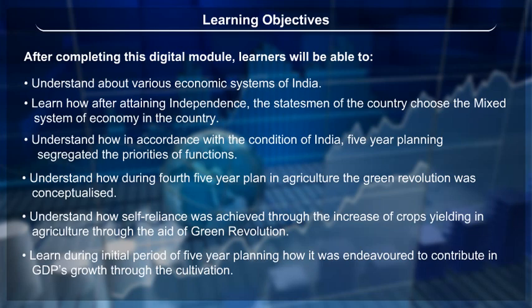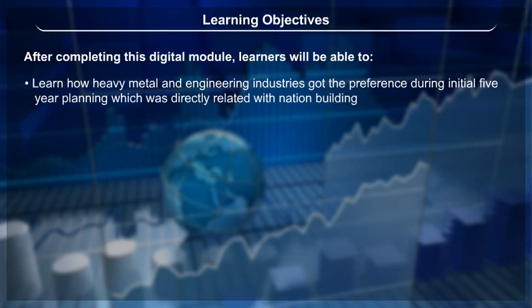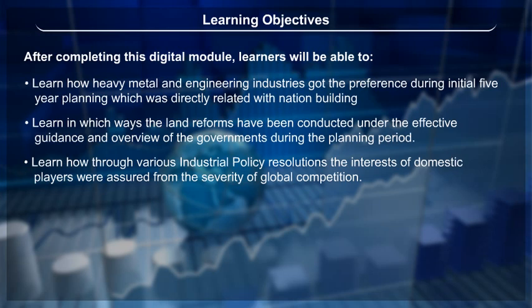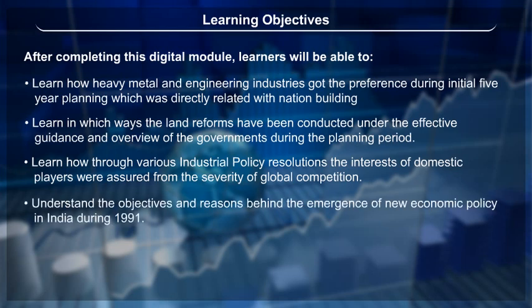Further objectives include: learning how heavy metal and engineering industries got preference during initial five-year planning, which was directly related to nation building; learning how land reforms were conducted under government guidance during the planning period; learning how through various industrial policy resolutions the interests of domestic players were protected from global competition; and understanding the objectives and reasons behind the emergence of the new economic policy in India during 1991.